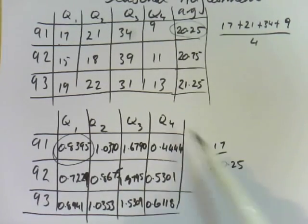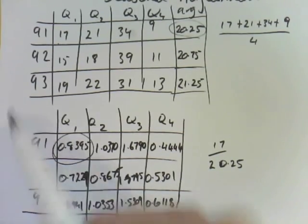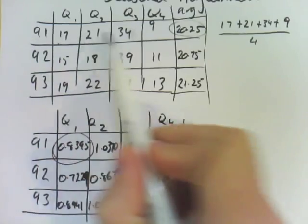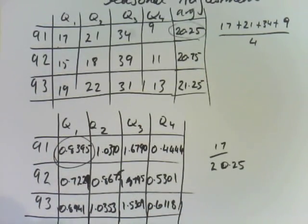Now you need to work out the seasonal averages. So we need to come down the column. The first step is to go across the years and work out the average. Now we work out the seasonal average for each of these quarters, which is called the seasonal index for that quarter.